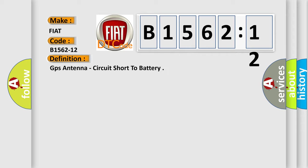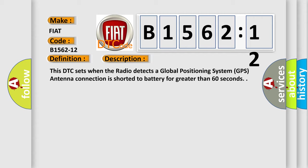And now this is a short description of this DTC code. This DTC sets when the radio detects a global positioning system GPS antenna connection is shorted to battery for greater than 60 seconds.